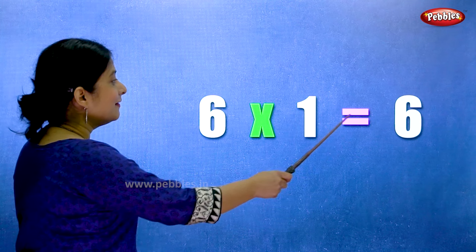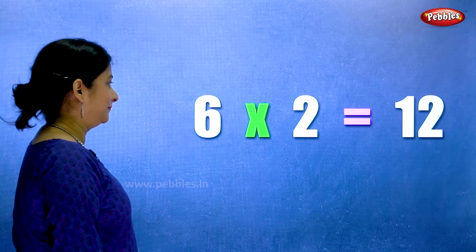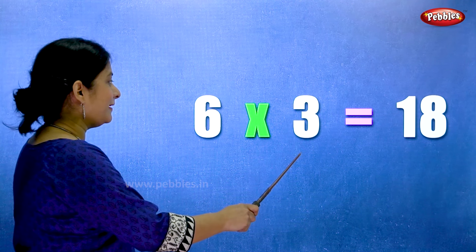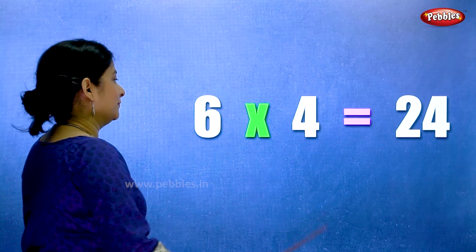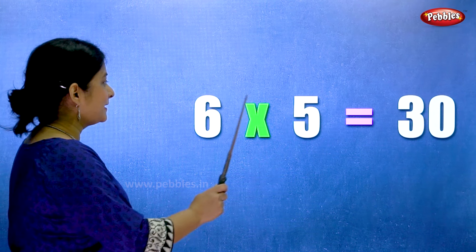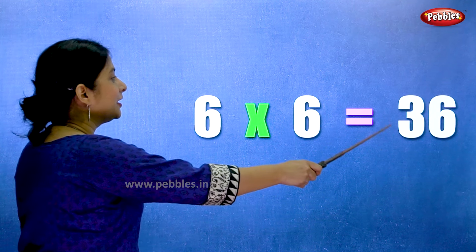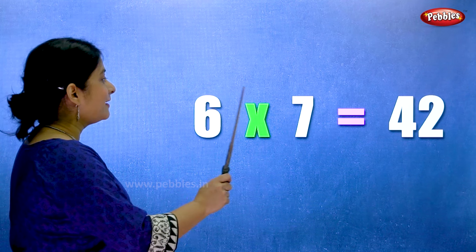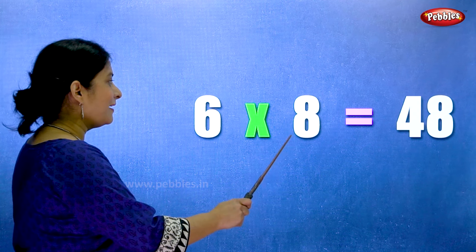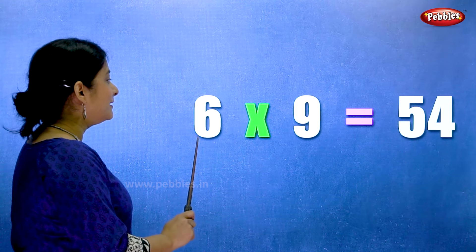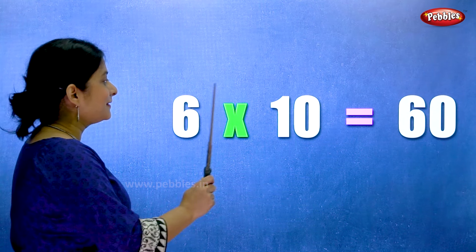Six ones are six. Six twos are twelve. Six threes are eighteen. Six fours are twenty-four. Six sixes are thirty-six. Six sevens are forty-two. Six eights are forty-eight. Six nines are fifty-four. Six tens are sixty.